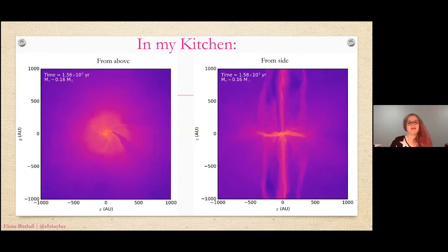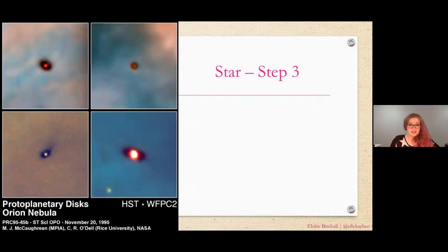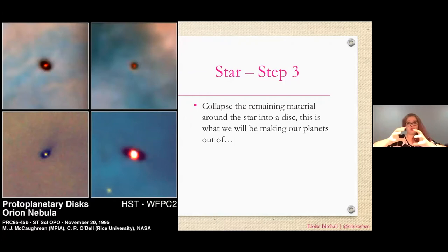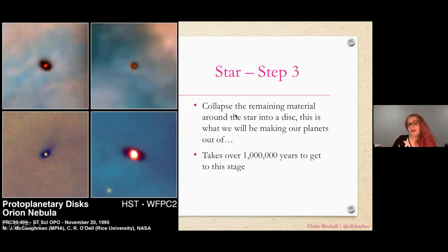Around these stars, as you can see in the right image, there's a yellow squiggle in the middle — that's a disk. When all the material is falling onto the baby star, if you've ever seen someone throw pizza dough — they start with a ball, throw it, and it flattens out into a disk like a pizza — that's what happens with all the material around the star. It spins and flattens out into a disk, and this is what we make our planets out of. That takes about a million years.